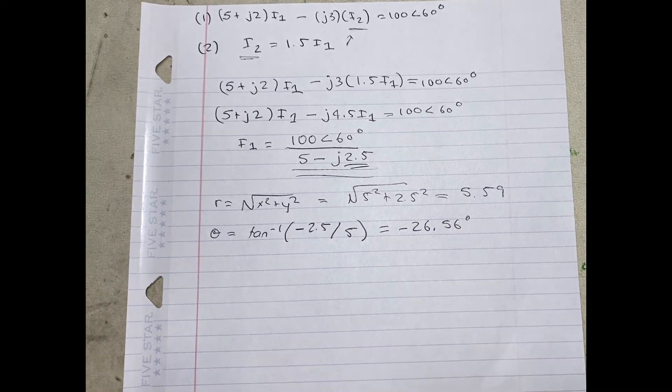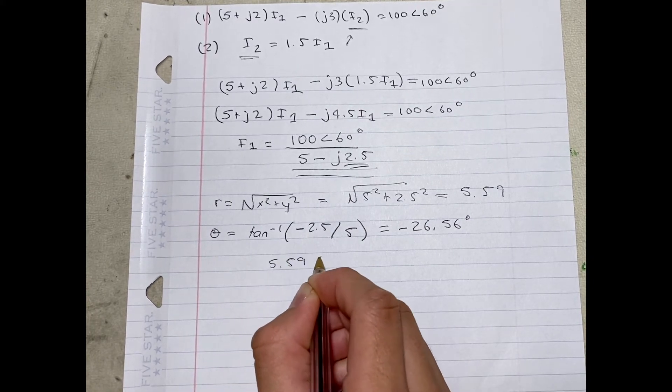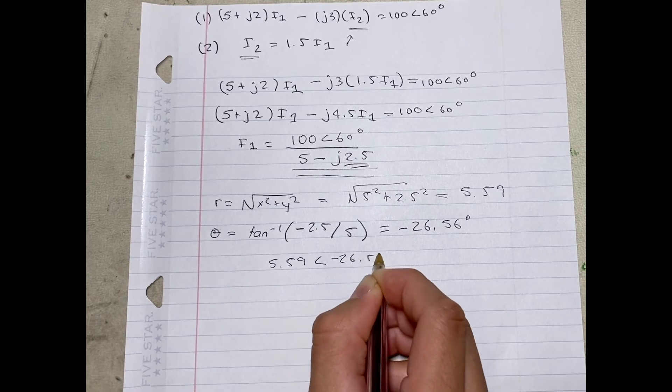Written out in polar form, it's going to be 5.59 angle negative 26.56 degrees.